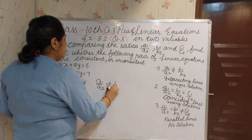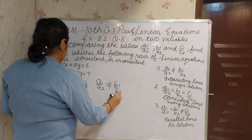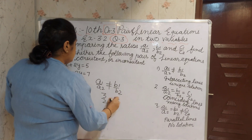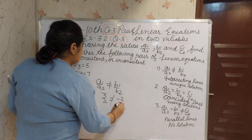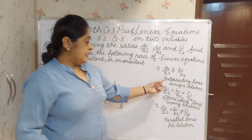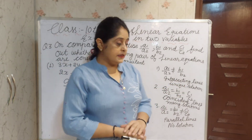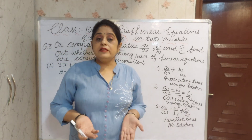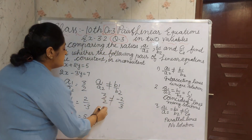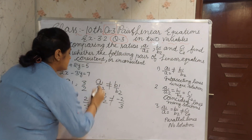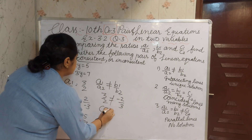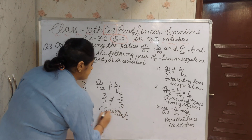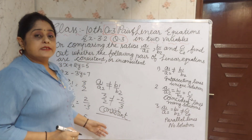A1 by A2 is not equal to B1 by B2, meaning 3 by 2 is not equal to minus 2 by 3. They are intersecting lines and have a unique solution. Since they have a solution, they are consistent. Our answer is consistent.